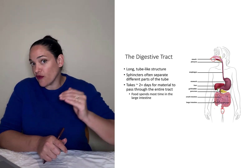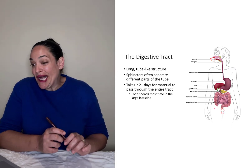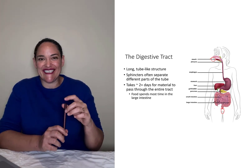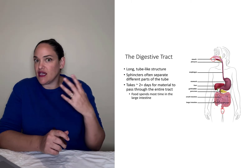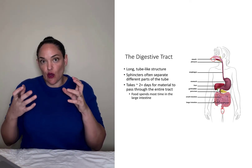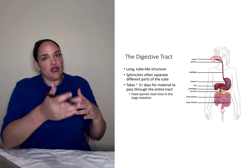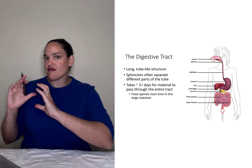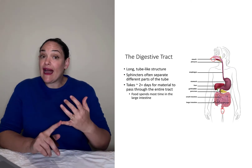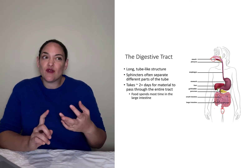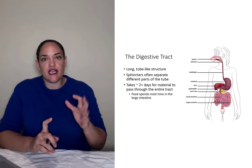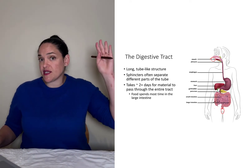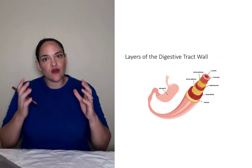It takes upwards of two days for material to pass from your mouth out to the other end, and the majority of that time — often a day or more — that food material is going to stay in the colon. Most food will have been absorbed before it reaches the colon, but that's where the majority of transit time occurs. Physical activity, fiber intake, and certain medications can all affect transit time; physical activity and fiber tend to speed up passage of material through the digestive tract.